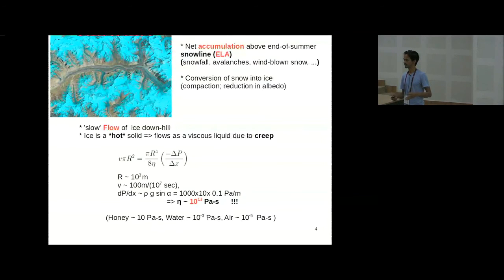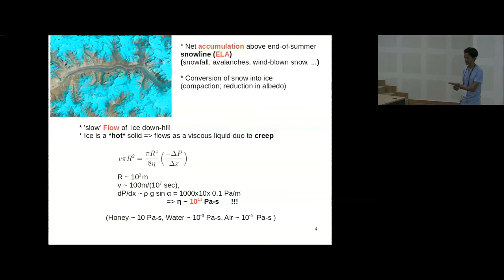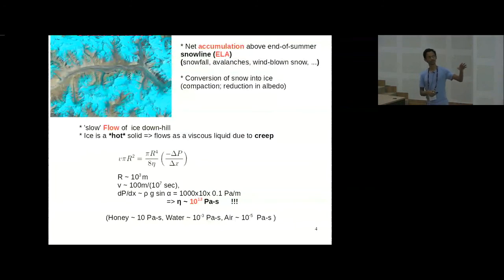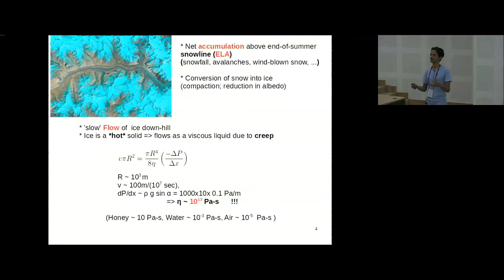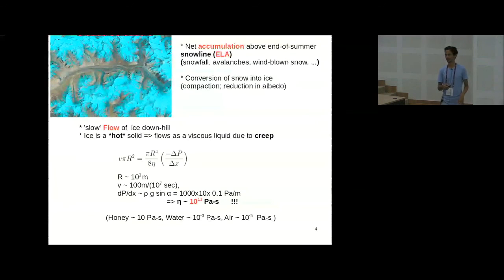In the Himalaya conversion from snow to ice takes a few years, but in Antarctica it may take a few hundred years. These snow crystals slowly get rounded up and the process is thermally driven. The ice can flow because it's a very hot solid — it's very close to its melting temperature. Because of that there will be lots of defects inside, and because of that there will be creep, the standard thing. So it basically flows like a viscous liquid.